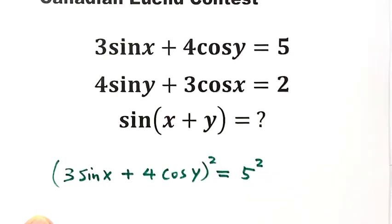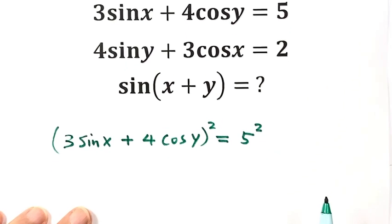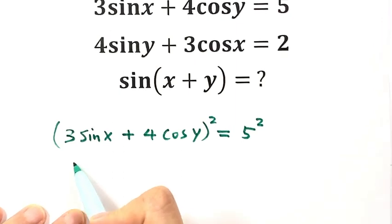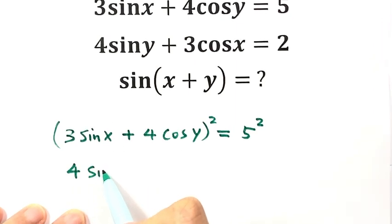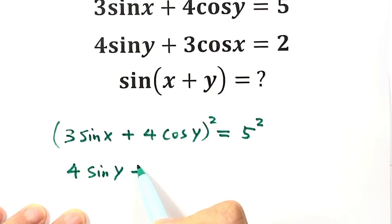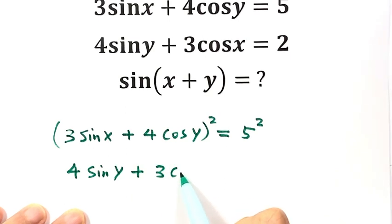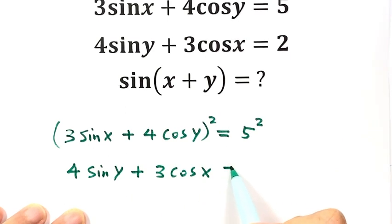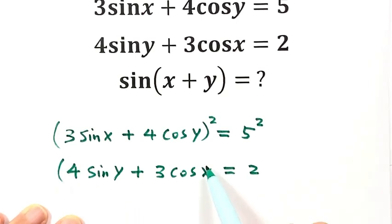Now let's write down the second equation: 4 sin y plus 3 cos x equals 2. Let's square both sides as well.